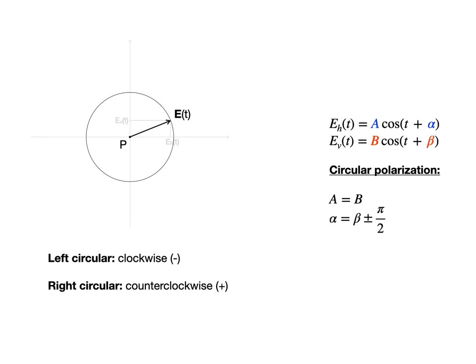On the other hand, when the polarization is right circular, the electric field vector E is rotating counterclockwise and alpha equals beta plus 90 degrees.